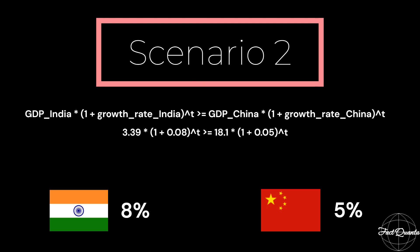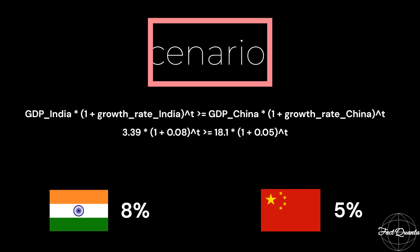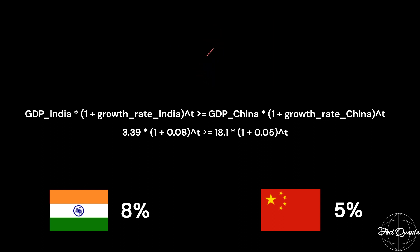Let's now imagine a scenario where India undergoes a remarkable industrial transformation, achieving a consistent annual growth rate of 8%, while China's growth rate remains around 5%. The answer is significantly reduced to 60 years.